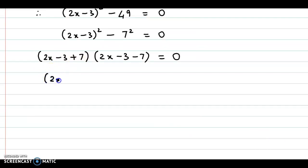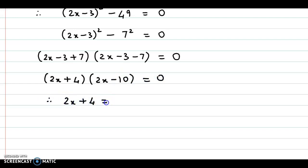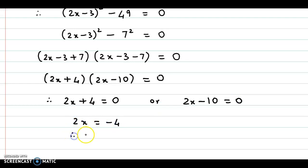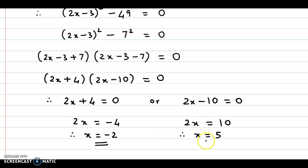So here we have 2X plus 4 equal to 0 and 2X minus 10 equal to 0. From 2X plus 4 equal to 0, we get X equal to minus 2. From 2X minus 10 equal to 0, we get X equal to 5. So the answers are minus 2 and 5.